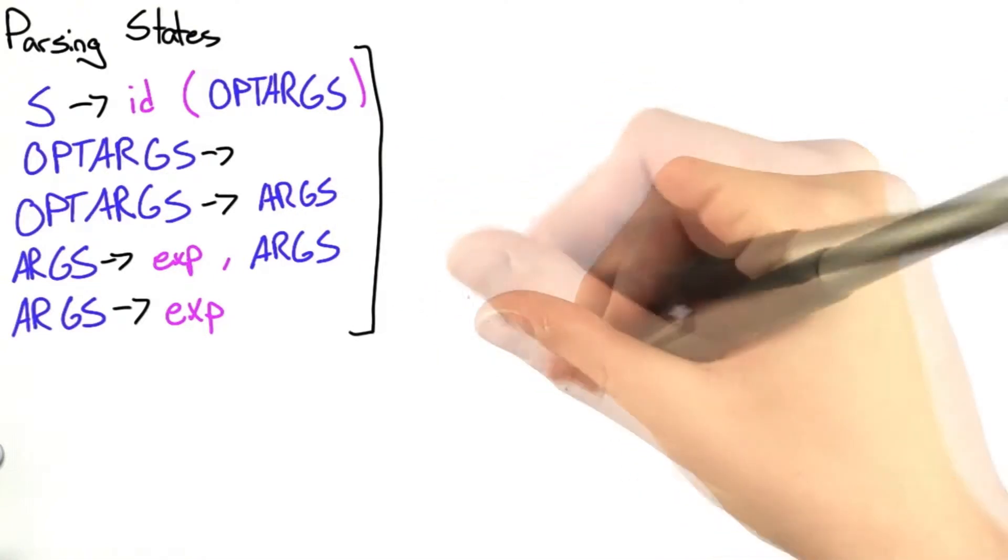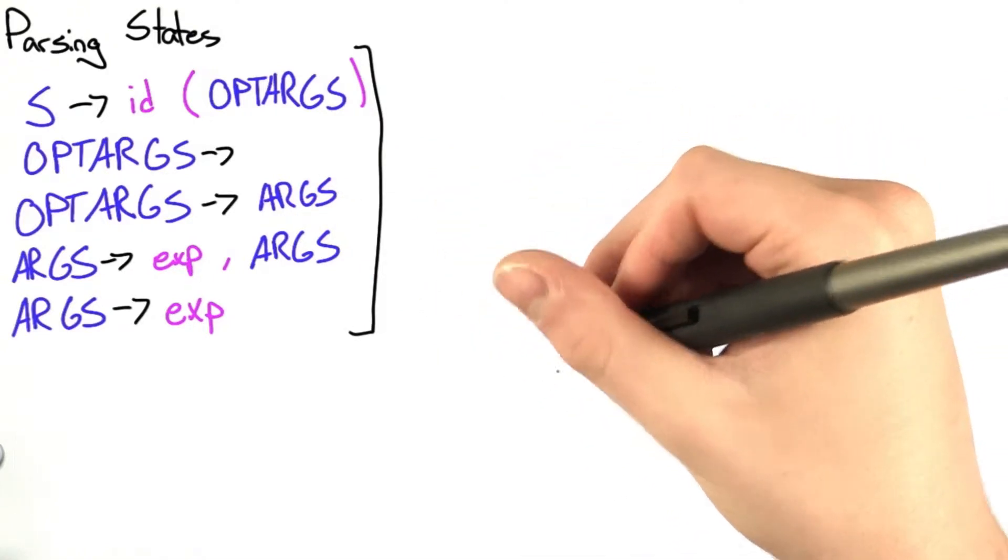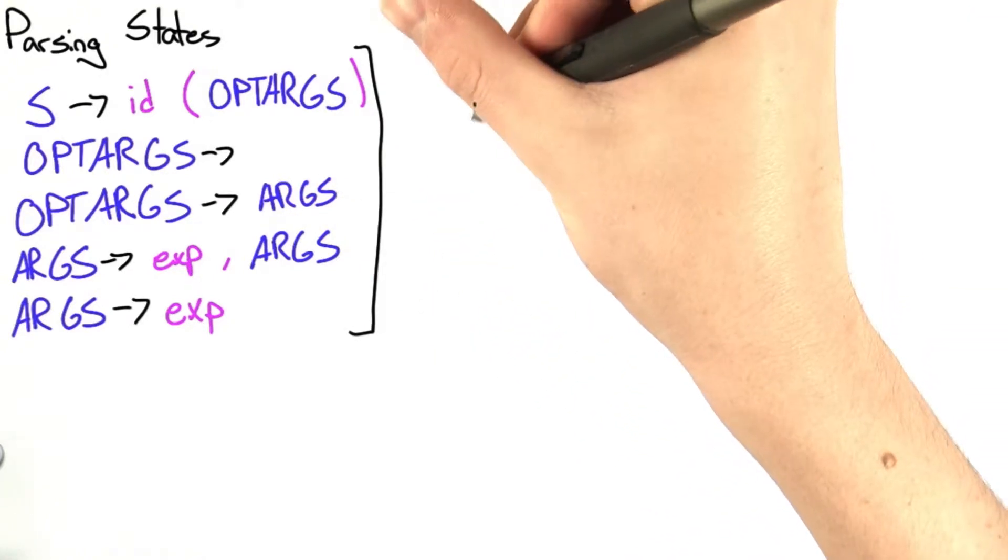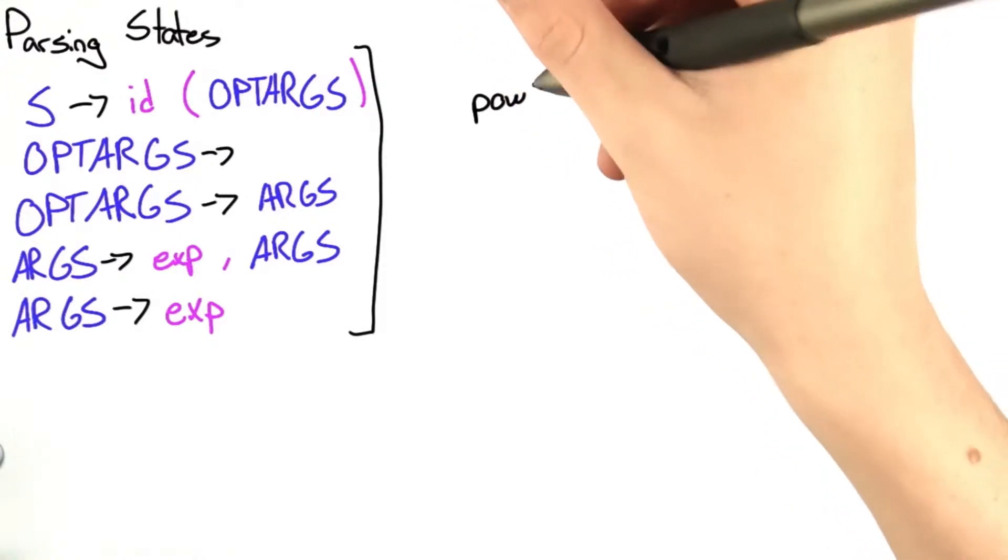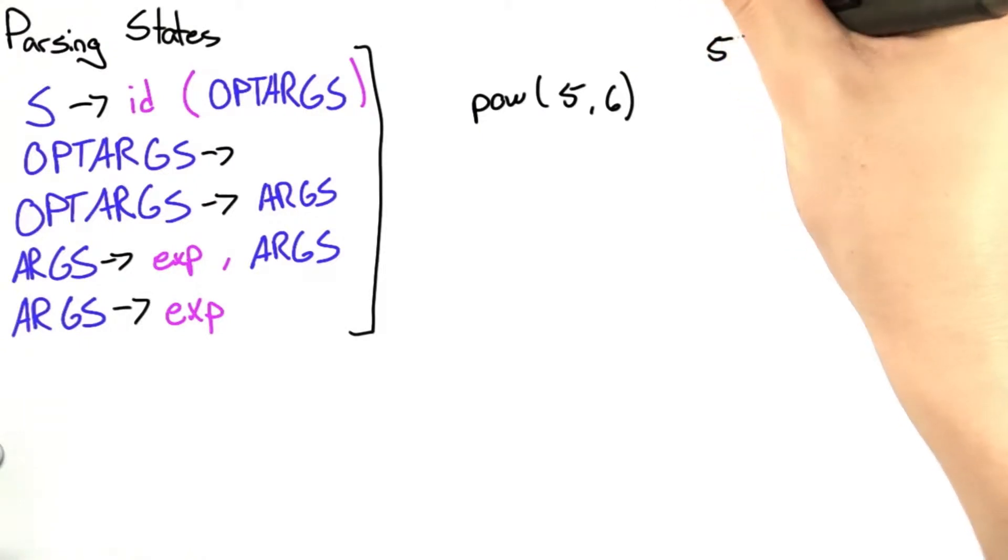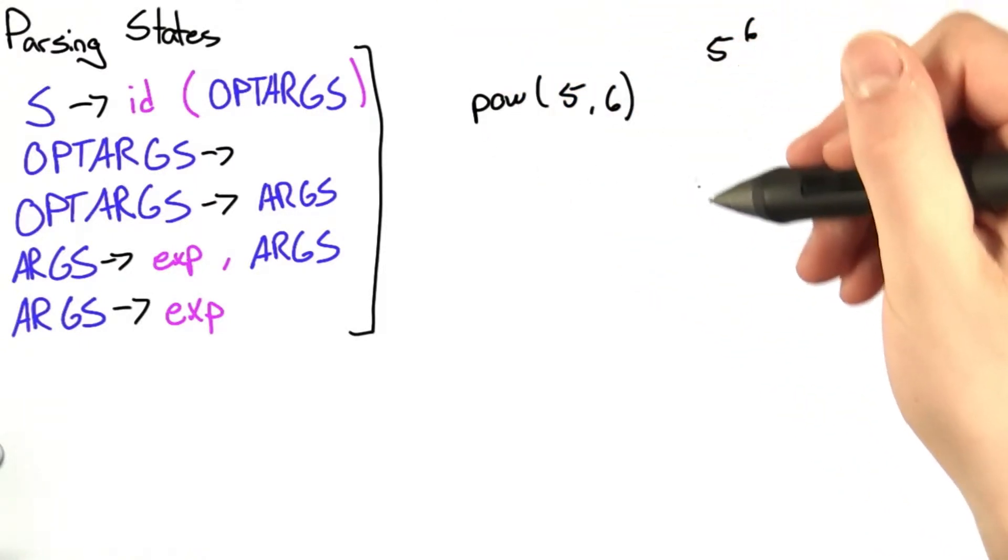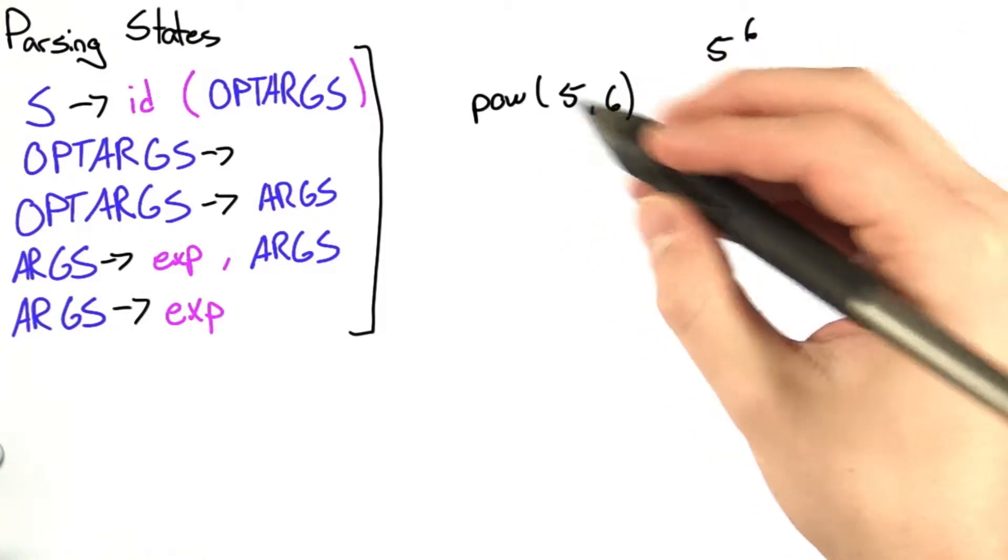Right here I have a grammar that identifies JavaScript function calls. Let's say I have a function pow, which computes the power of a number to another number. The idea is that this function computes 5 to the 6. But what we care about is the tokens right here.